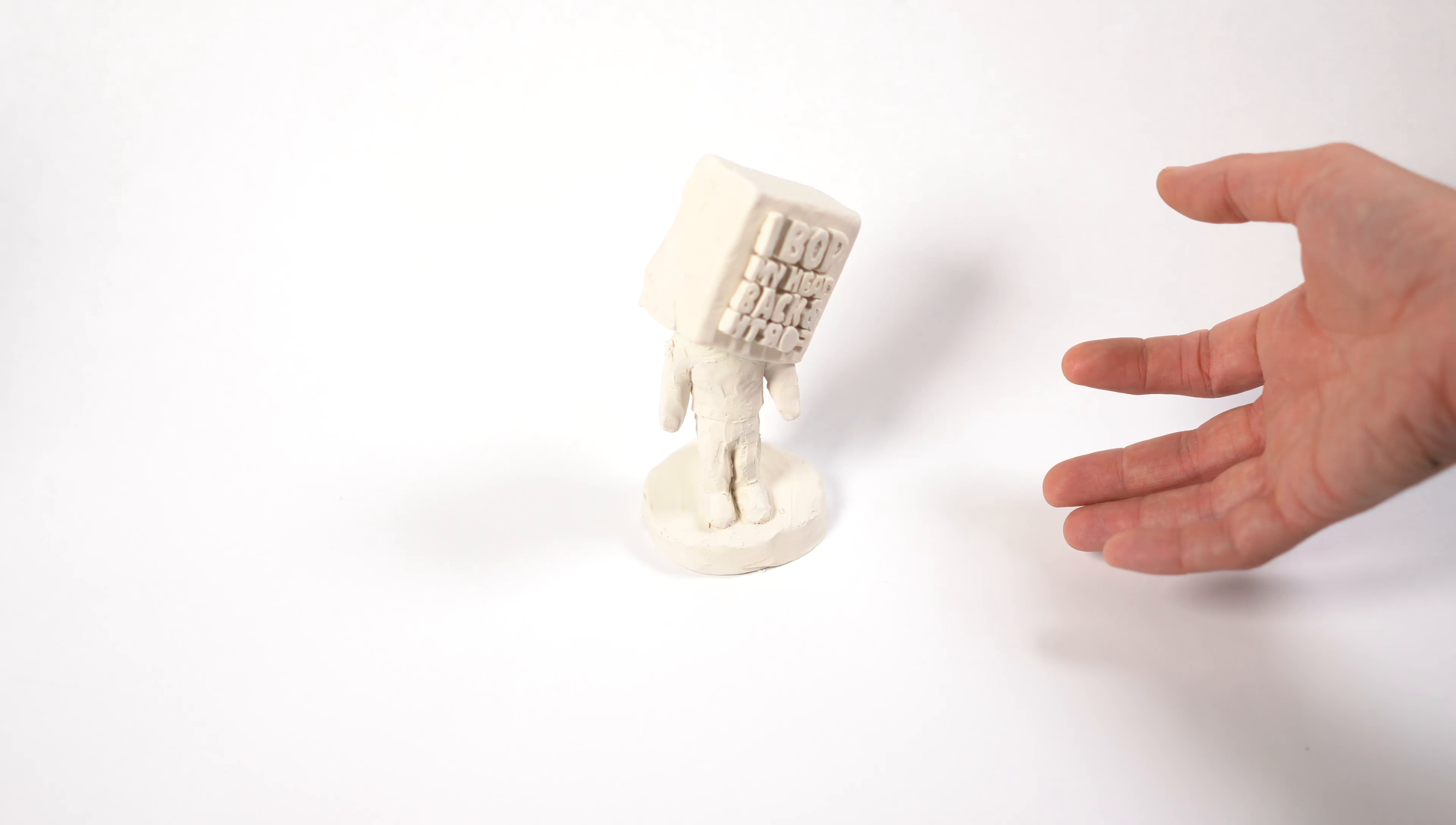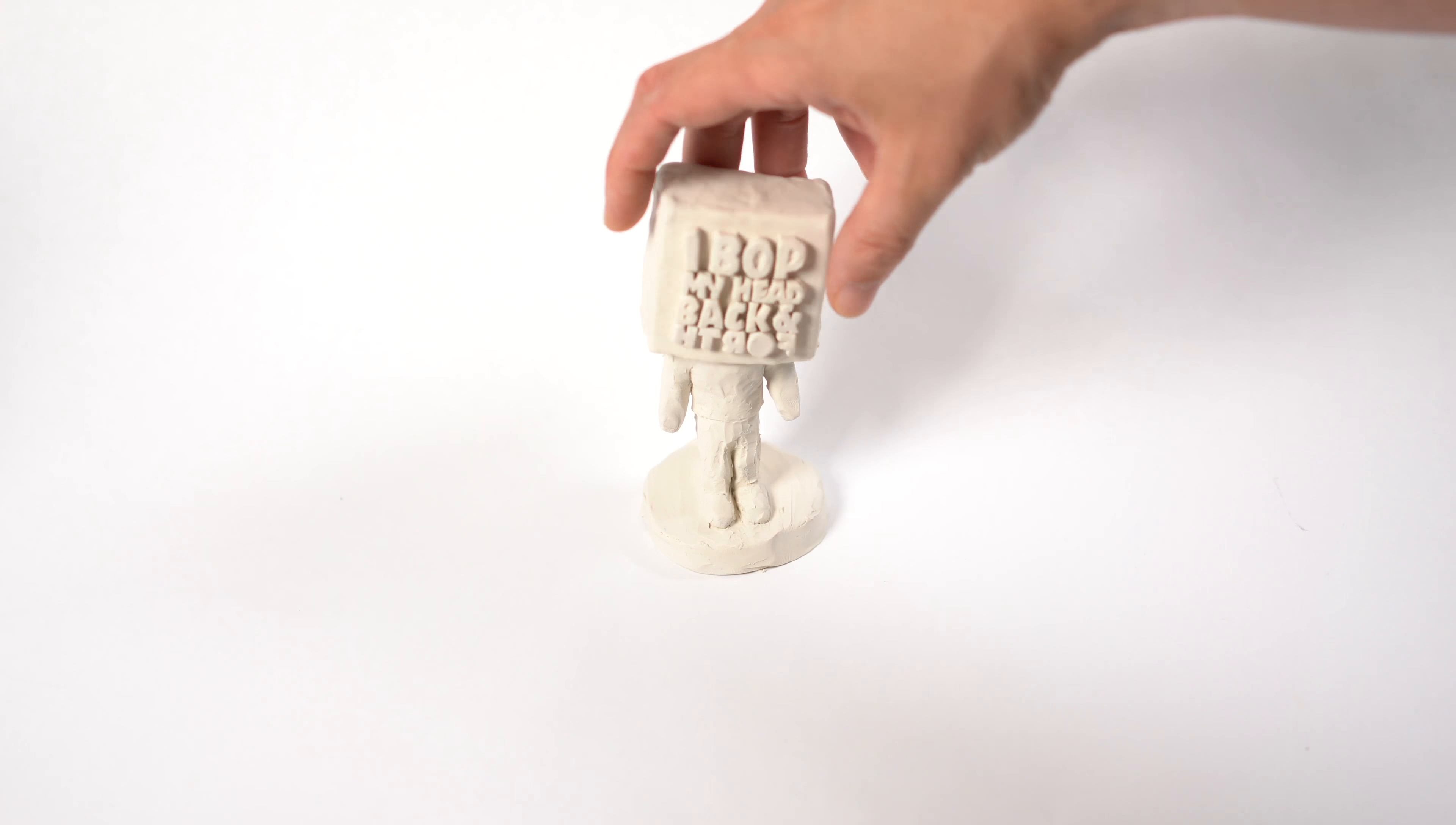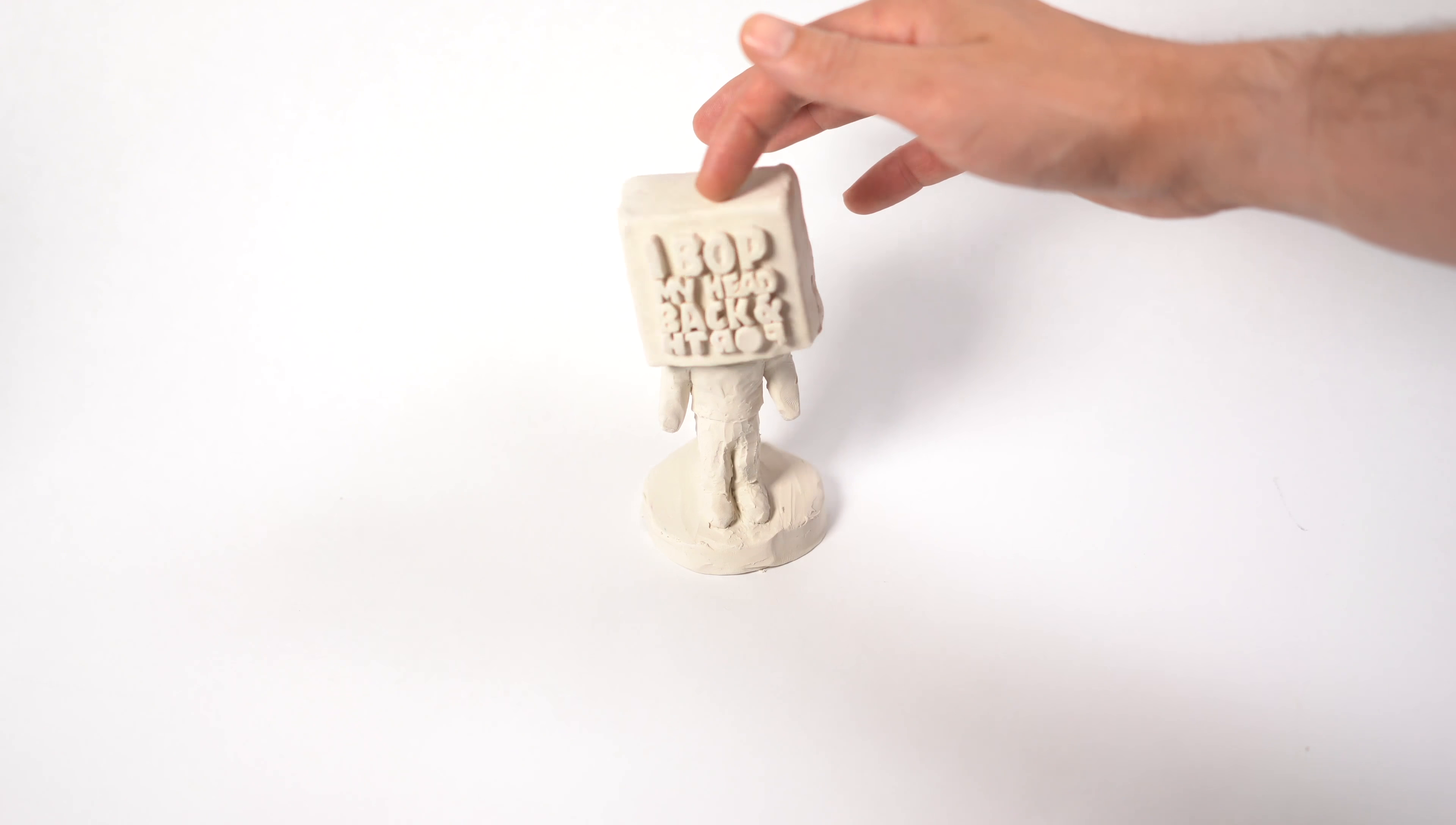So you can see what it's made out of. There's a base, body, and head. Now the head had to be super light. Even though this is made out of clay, you have to make it light so it can actually bobble-ish.